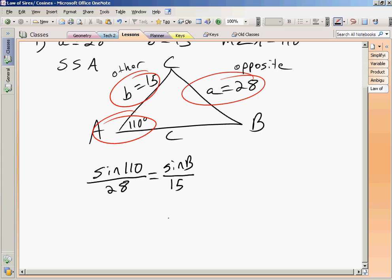The first thing to do is just cross-multiply. So I get 28 sine of B is equal to 15 sine 110. Then I divide both sides by 28. You get sine of B is equal to 15 sine 110 over 28.